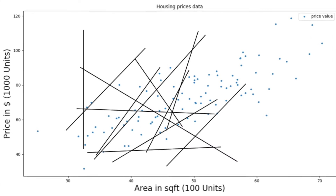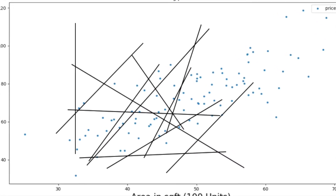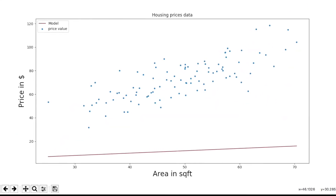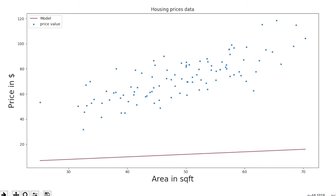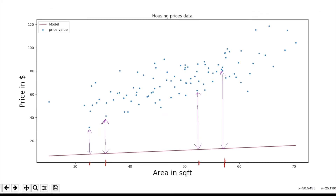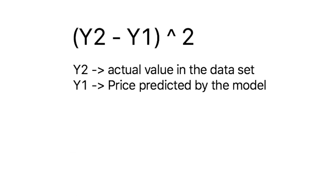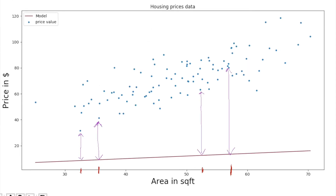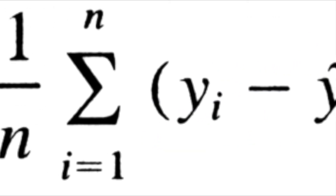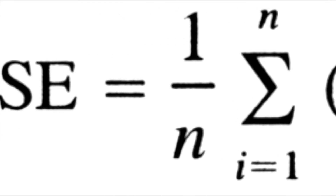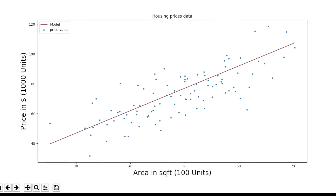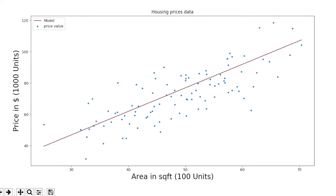One way is to try and draw every type of line possible and figure out which is the best line, or take a mathematical approach. We first start off with a random line by initializing random values for m and b. For each data point in the input space, we compute the error in our prediction — the difference between the prediction made by our initial model and the actual price output — and square it to remove any negative sign. We sum over each data point and divide by the total number of data points, which is the average error. This is called the mean squared error, or the cost function. For the best fit line, the mean squared error is minimum, so the objective is to find the values of m and b that will have the minimum error.